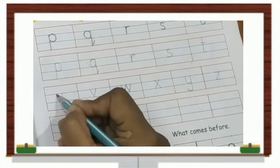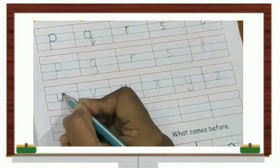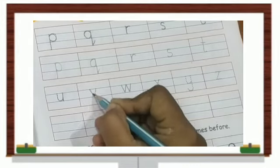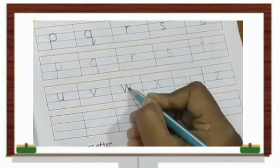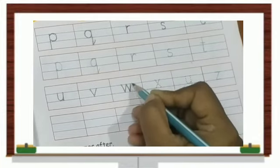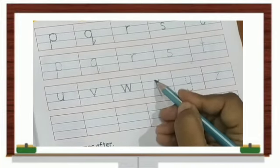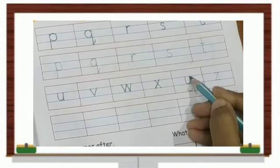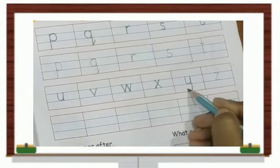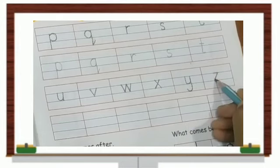After T comes U. Let's trace this. U. V. W. X. Y. And then comes Z.